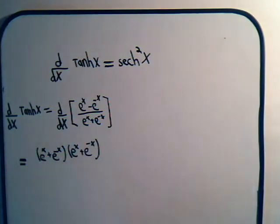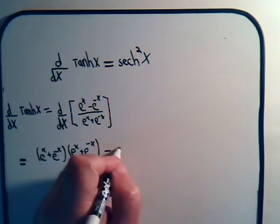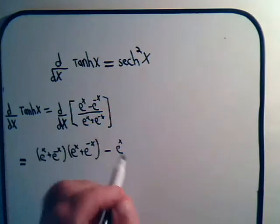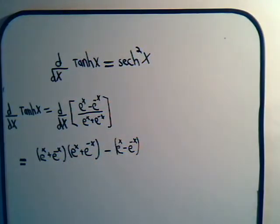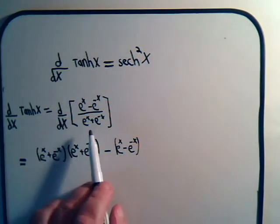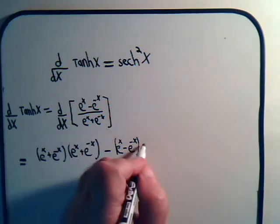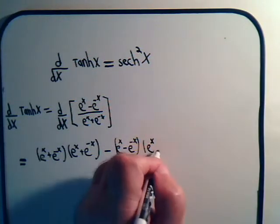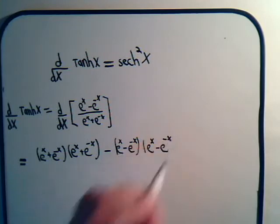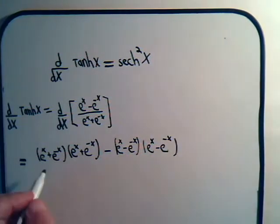Then we subtract the numerator times the derivative of the denominator. So we have e to the x minus e to the minus x, multiplied by the derivative of e to the x plus e to the minus x. The derivative of e to the x is e to the x, and the derivative of e to the minus x is minus e to the minus x, times dx/dx which is 1.